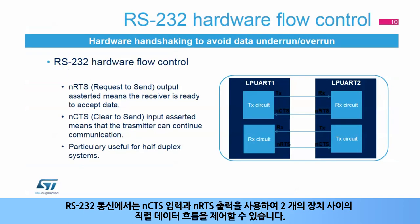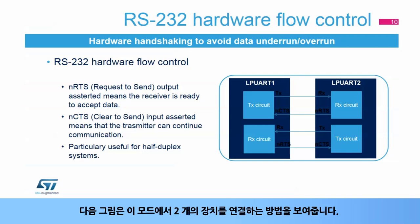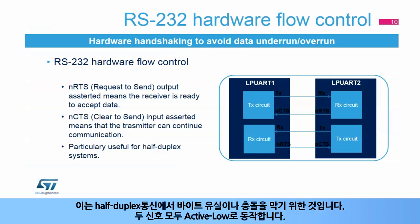In the RS-232 standard, it is possible to control the serial data flow between two devices by using the NCTS input and the NRTS output. These two lines allow the receiver and transmitter to alert each other of their state. This slide shows how to connect two devices in this mode, to prevent dropped bytes or conflicts in case of half-duplex communication. Both signals are active low.